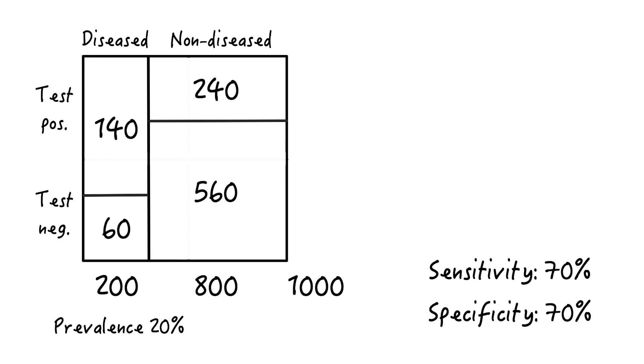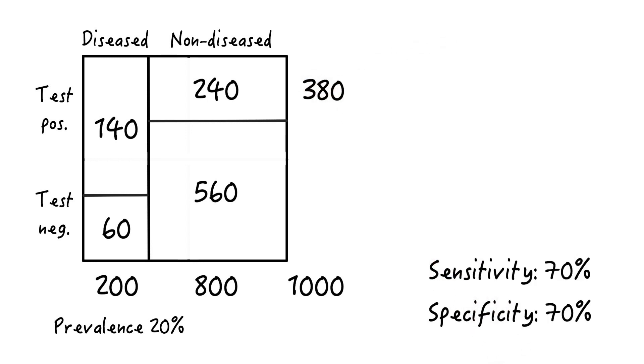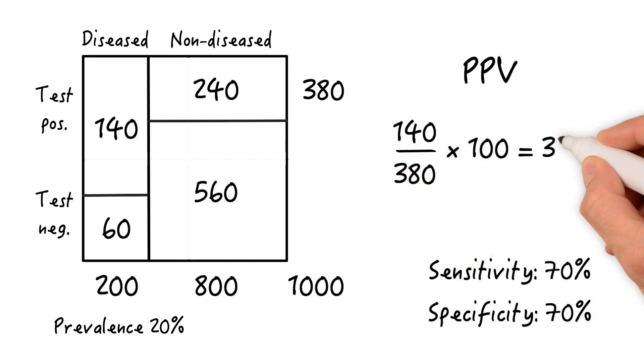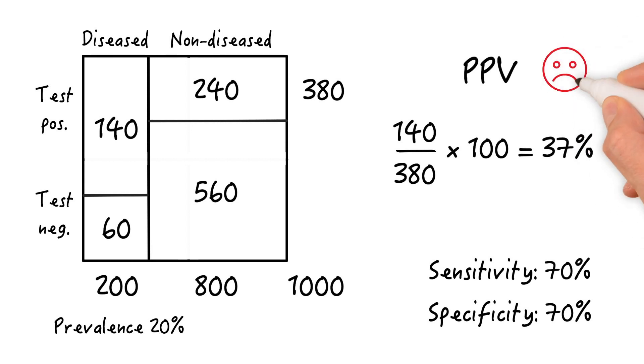Overall, we have 380 folks who tested positive, 140 true positives and 240 false positives. Now, let's calculate the positive predictive value. That's 140 true positives divided by 380 who tested positive, times 100 equals 37%, so pretty bad.